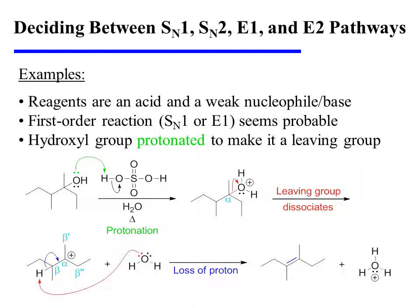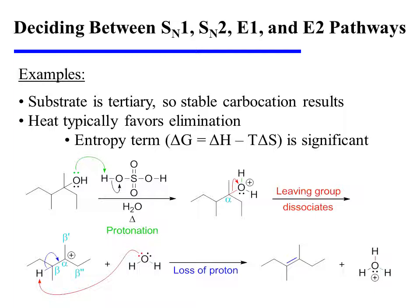In the next example, an alcohol is treated with sulfuric acid and water. Our reagents are an acid and a weak nucleophile or base, which suggests a first-order reaction — either SN1 or E1 seems probable. The hydroxyl group is first protonated to convert it into a good leaving group. The substrate is tertiary, so when water dissociates, it leaves behind a reasonably stable tertiary carbocation. At this point, we need to decide between substitution and elimination products. Notice that heat, denoted by the capital Greek delta, was stipulated as a reaction condition.